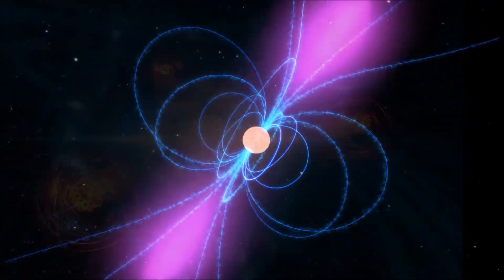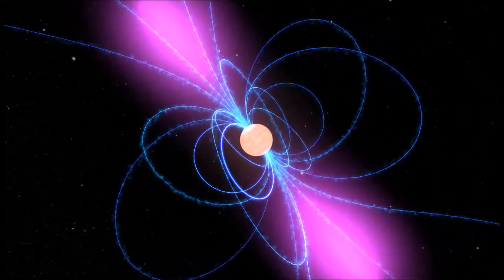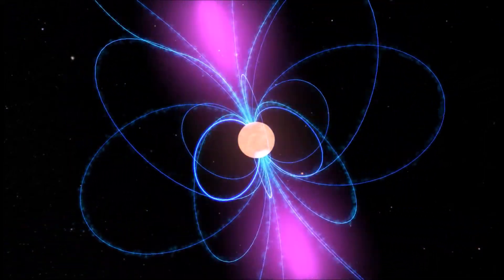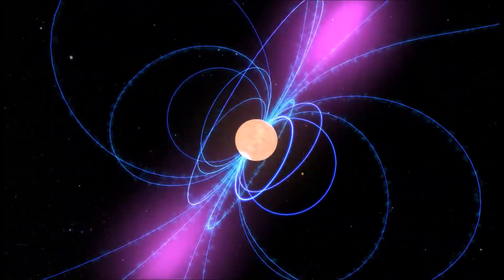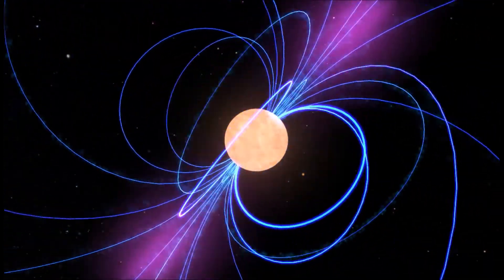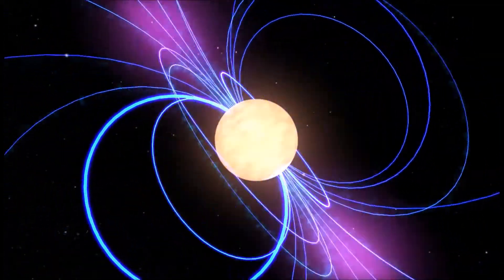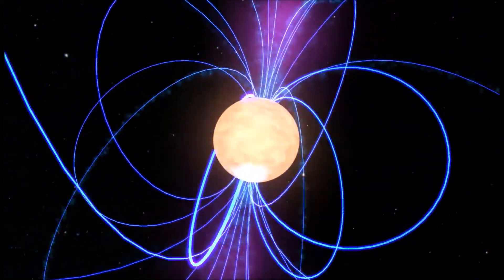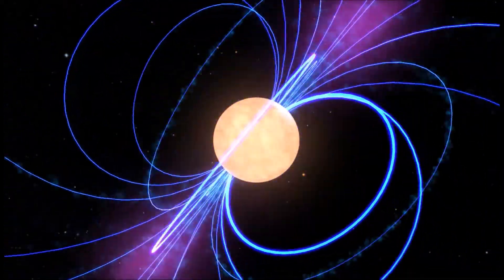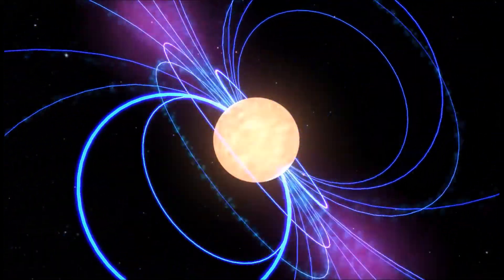Though many neutron stars are undetectable due to the fact that they are not emitting very much radiation, a special type of neutron stars called pulsars are the exception. Pulsars are rapidly spinning neutron stars that emit beams of electromagnetic radiation out of their poles. This radiation is only detectable at certain positions in the pulsar's rotation, and as it spins, the beam disappears and reappears at regular intervals. These pulses of radiation gave pulsars their name.